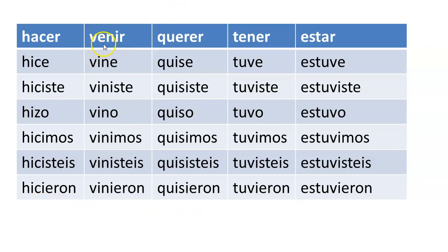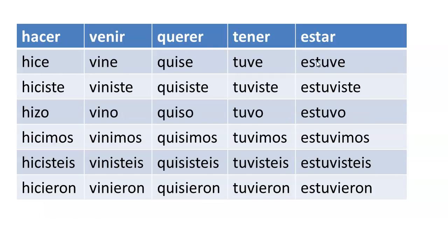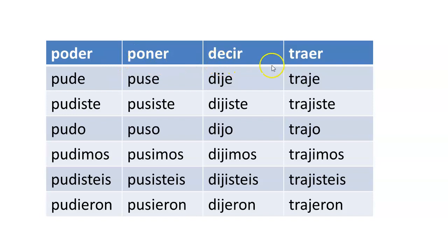The other common irregular preterite verbs in Spanish are: venir (to come), querer (to want), tener (to have), estar (one of the verbs for to be), poder (to be able to), poner (to put), decir (to say), and traer (to bring). I will have separate videos for each of these other irregular verbs. This is a good overview of all the irregular preterites: hacer, venir, querer, tener, estar, poder, poner, decir, and traer. It's really just a matter of memorizing through practice. Fortunately, there aren't too many irregular preterite verbs, but the ones that do exist are used very often in conversation, so it's really important to learn them.